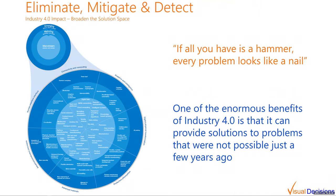Another big impact of Industry 4.0 is to broaden the solution space. For many problems in manufacturing, the fix will be some alteration to the physical equipment involved. Going back to the fishbone diagram, these fixes primarily relate to the machine branch. However, when the problem is related to man, material, method, management, or even environmental factors, the fixes are often process- or system-based. And for many of those issues, the technologies of Industry 4.0 can provide tremendous benefits.